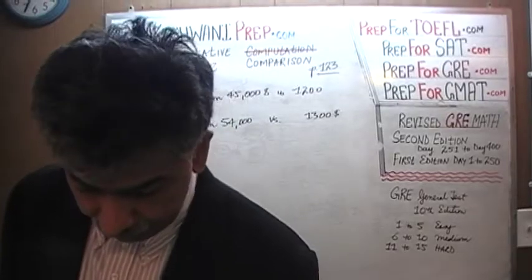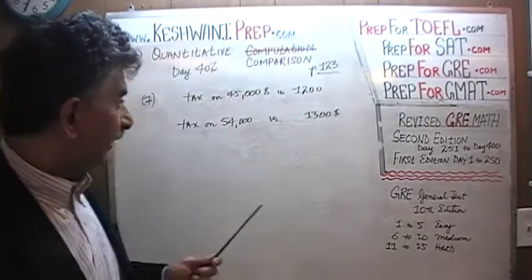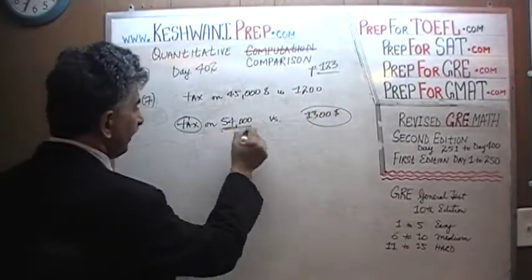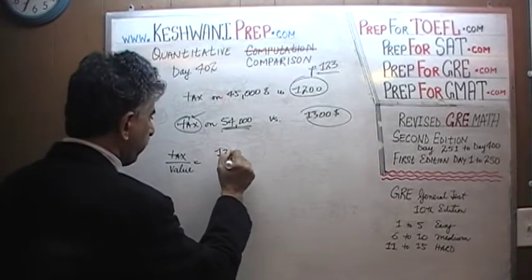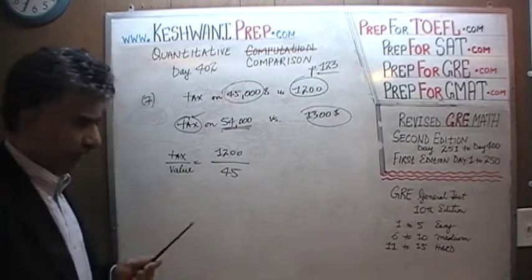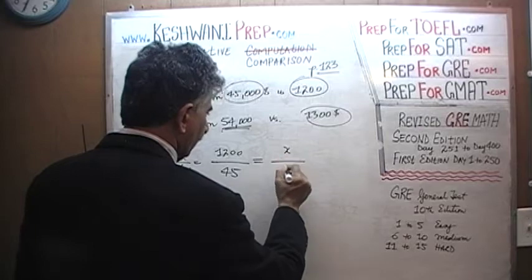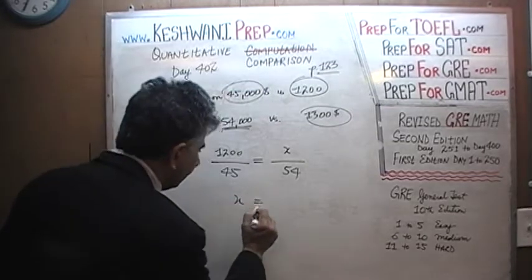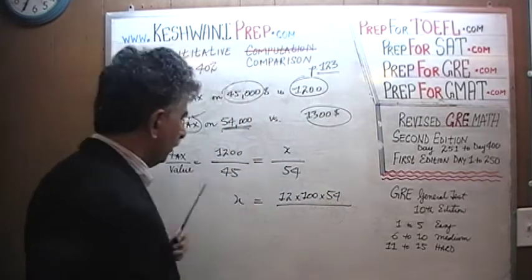There are several ways we can solve this problem. One way is to set it up as a proportion. We place the tax amount over the value of the property: 1200 over 45,000 equals X over 54,000. Cross-multiplying, X equals 1200 times 54 over 45 — which I'll write as 12 times 100 times 54 over 45.